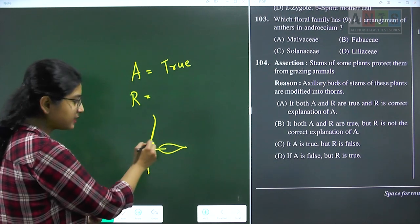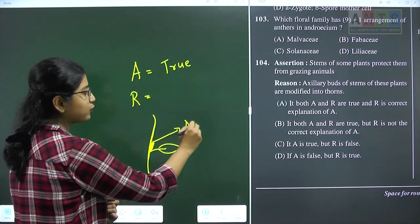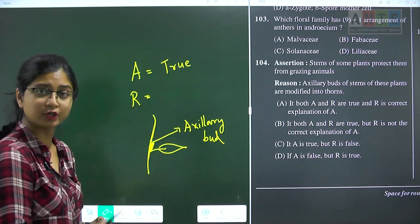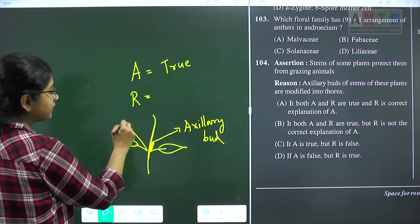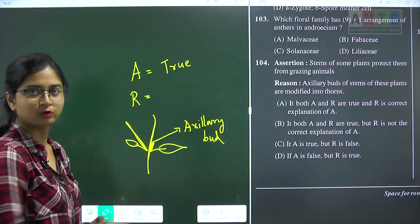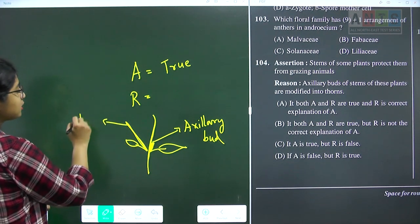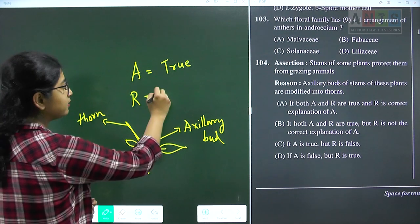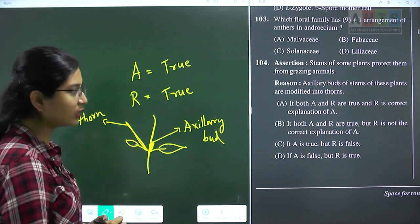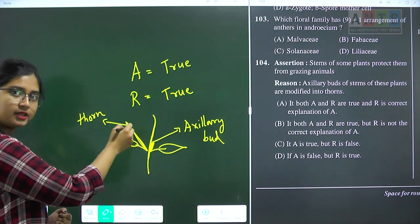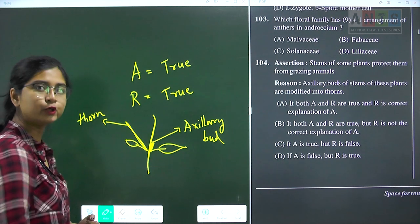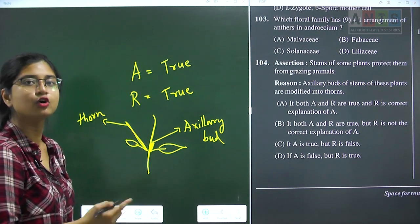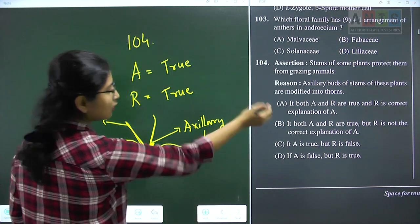When we study thorn modifications, the axil portion of the stem contains an axillary bud. Generally the axillary bud develops into a lateral branch. But if this axillary bud forms a sharp pointed structure, the plant gets protection from grazing animals. This sharp pointed structure — the thorn — is actually coming from the axillary bud. The reason is the correct explanation of the assertion. Question 104 answer is option A.